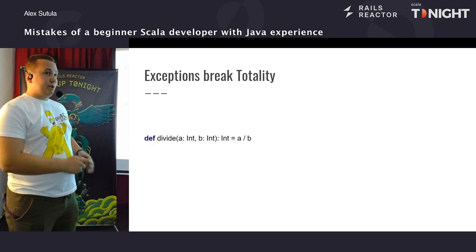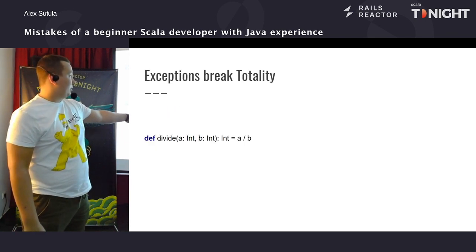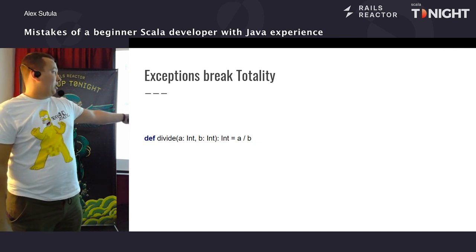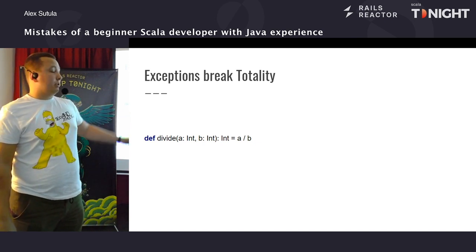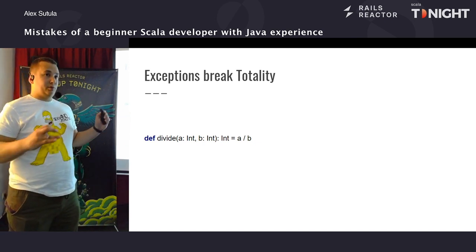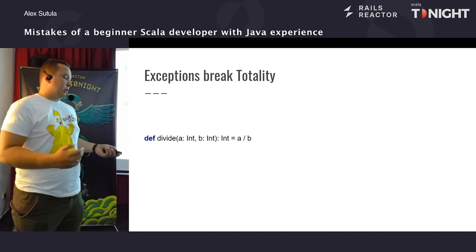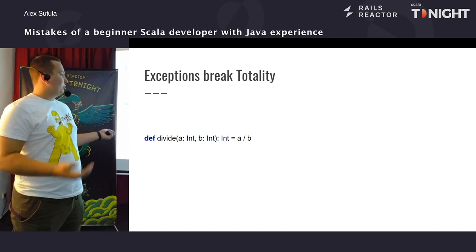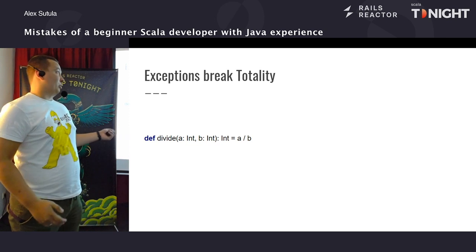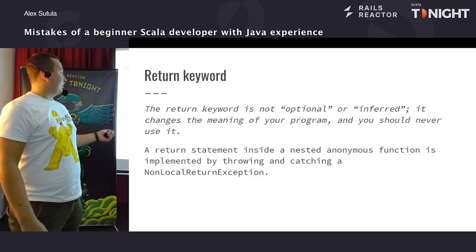Чиста функція: наприклад, якби ми обгорнули оце ділення в try і потім використали getOrElse якусь стандартну змінну — тоді було б ідіоматично.